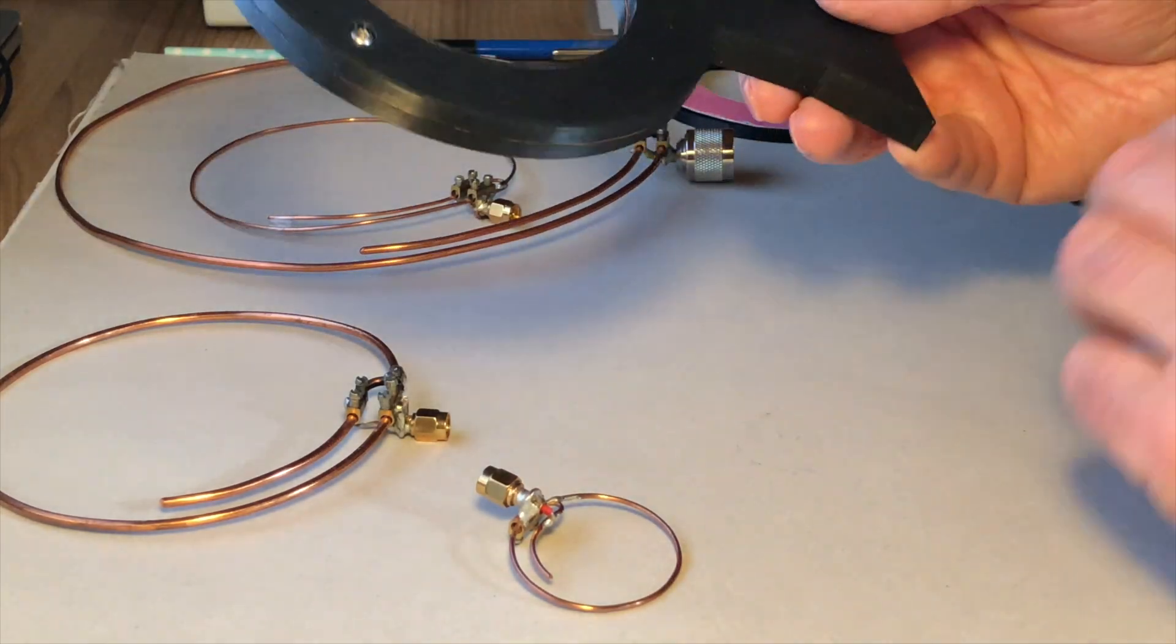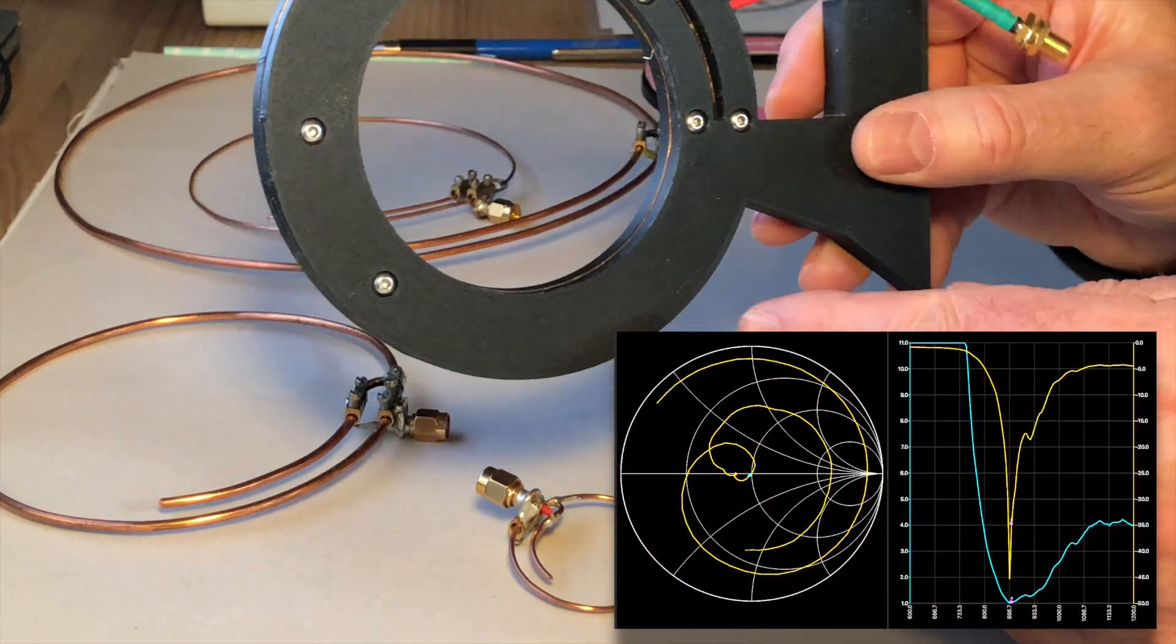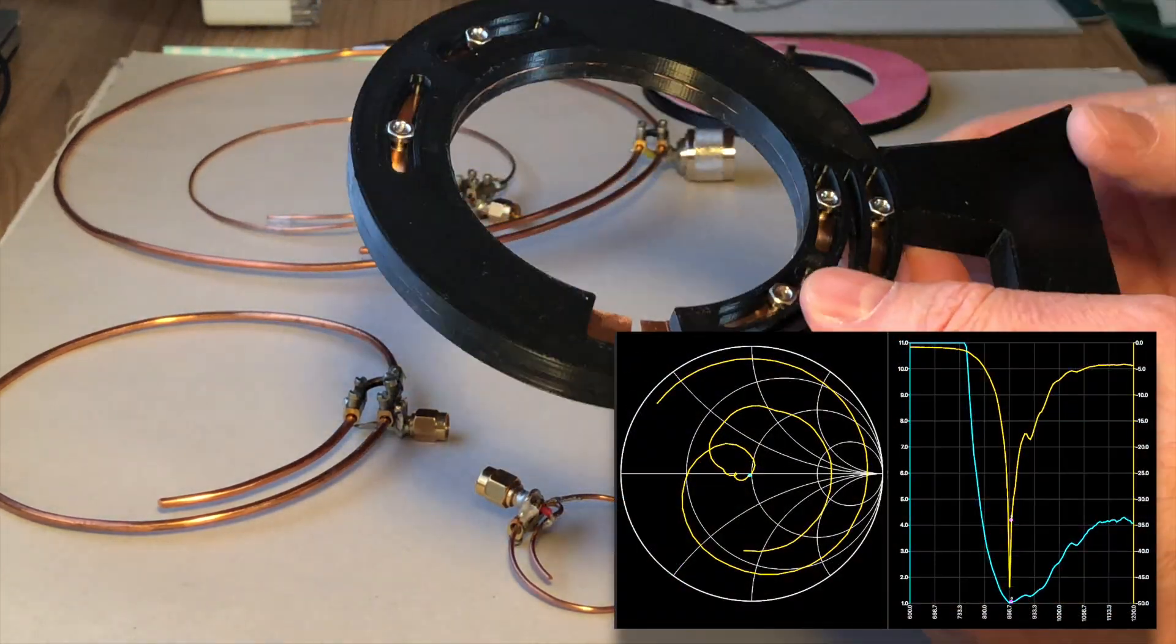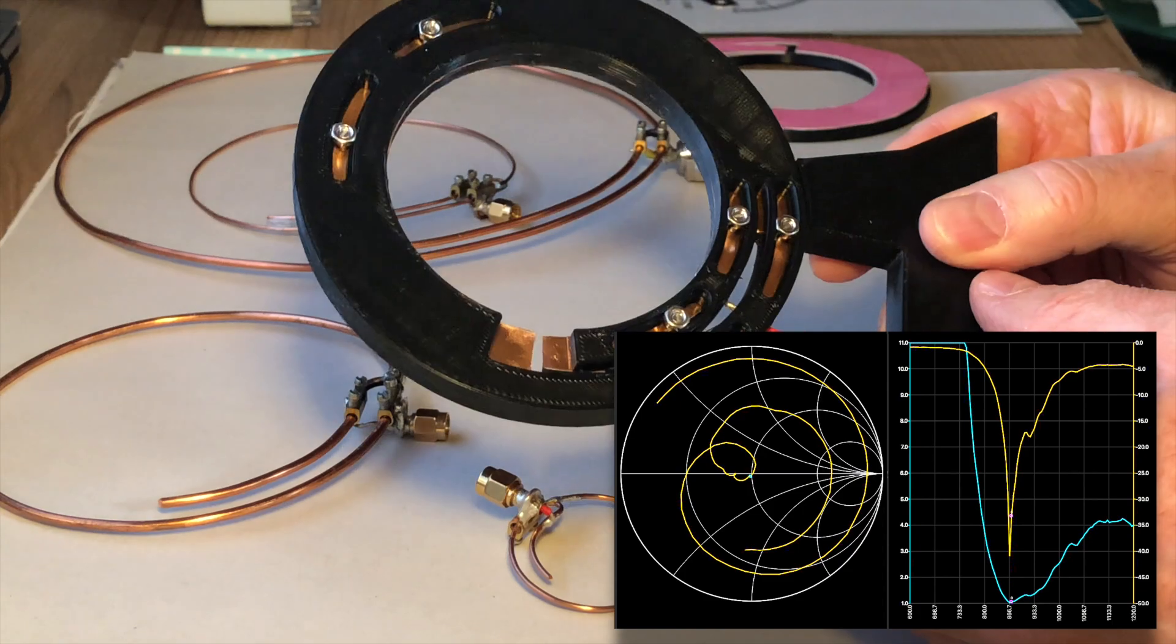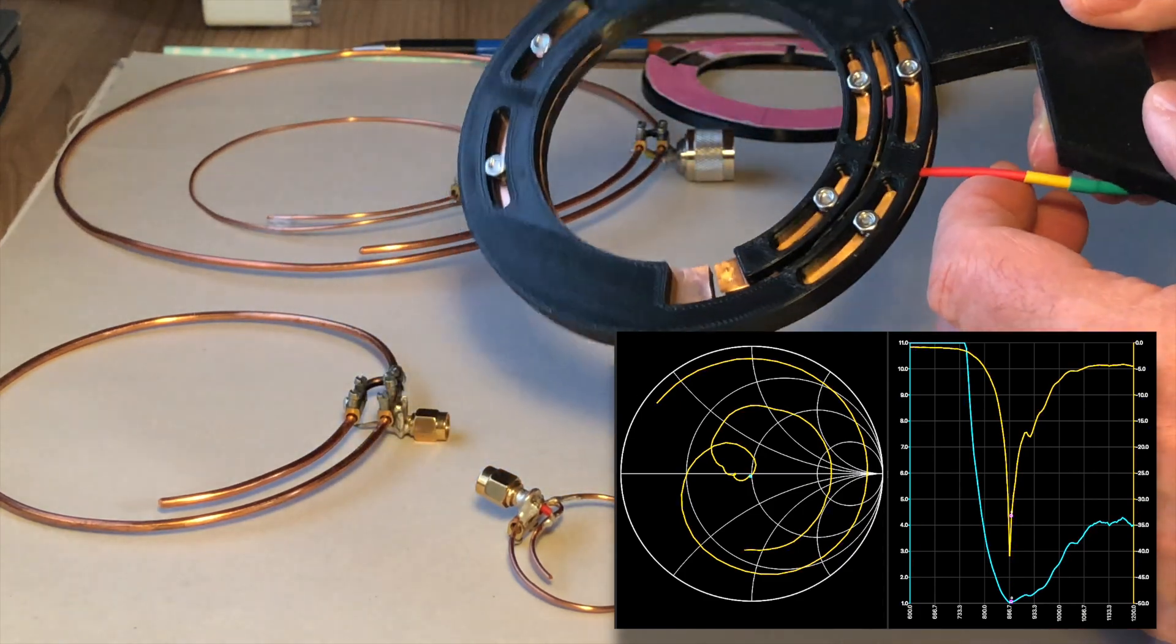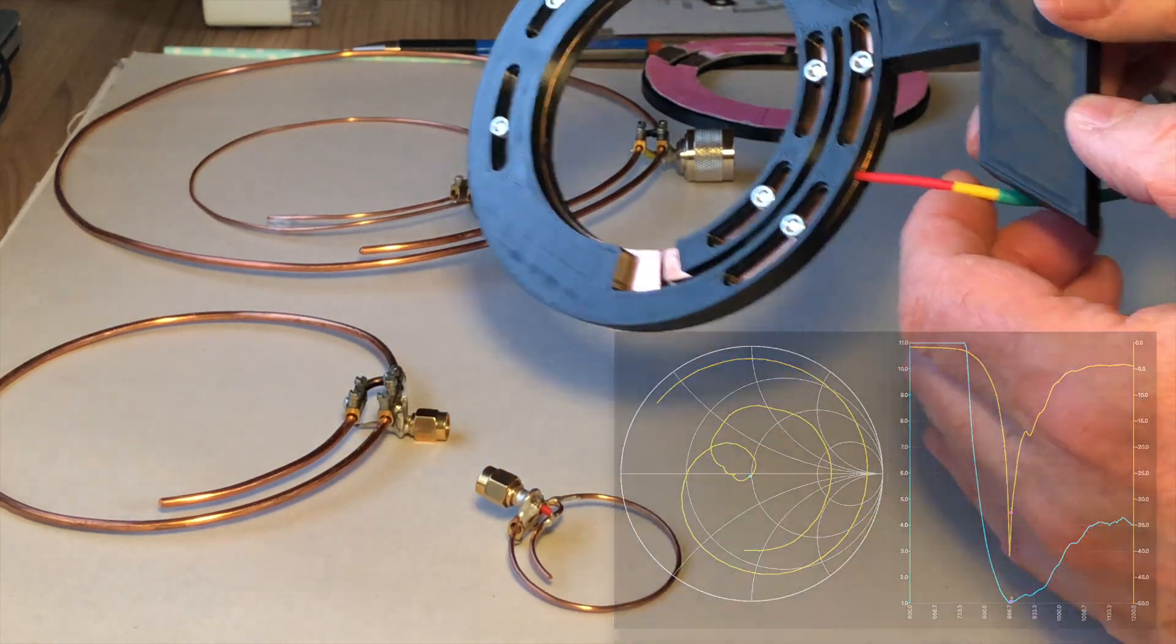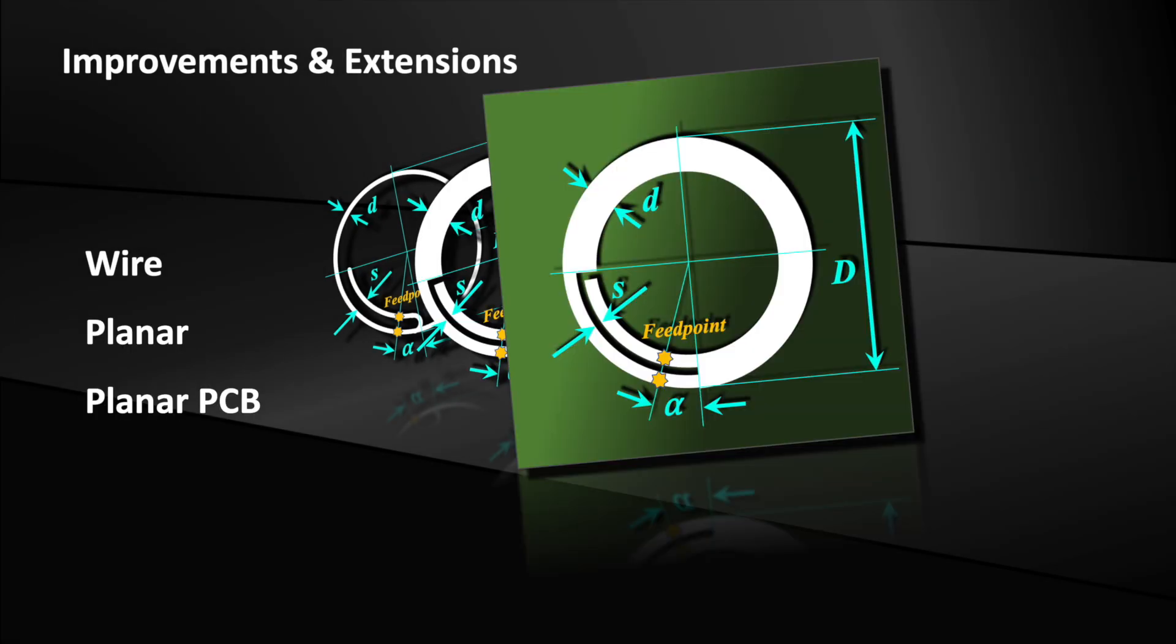The first designs were made of thick wire. Then we added planar antennas, which are working very well. This motivated me to complement the tool for PCB antennas and with the results from some experiments we were able to improve the accuracy.